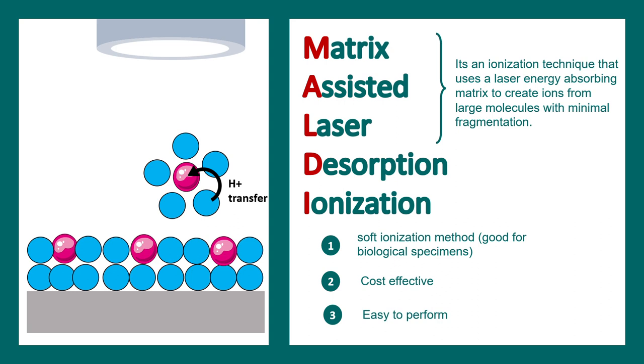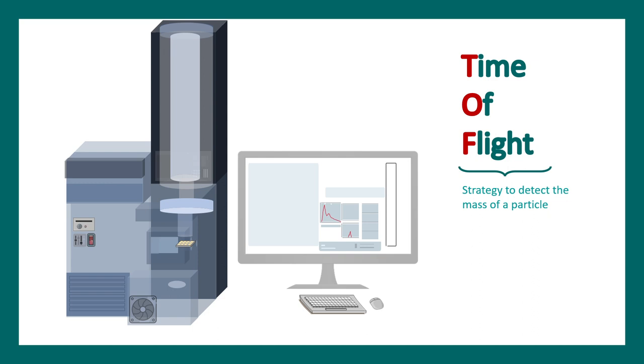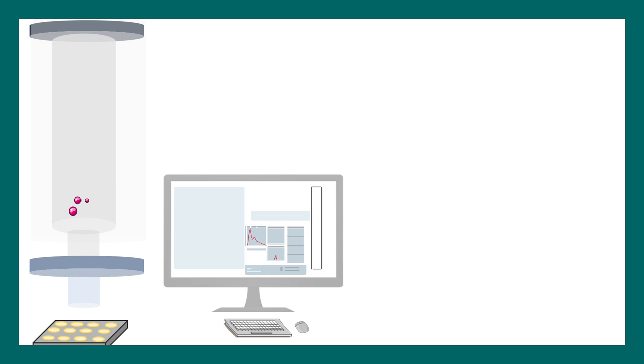Now let's try to understand the time of flight aspect. This is a strategy to detect the mass of the particle. If we look at the inside part of the TOF analyzer, we can see the matrix which is localized with the sample on top of it. There is a long tube known as the flight tube, and at the end of the flight tube there is a mass detector. On the screen you would see the mass-to-charge ratio displayed whenever there is a detection happening.